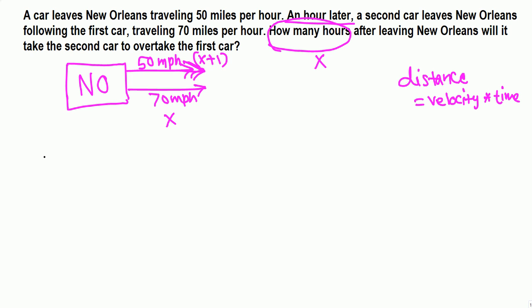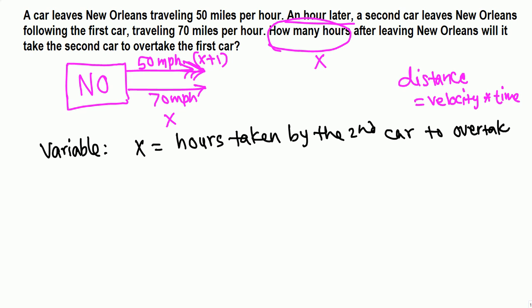We set up in this way: variable is x. x equals the number of hours it will take the second car, hours taken by the second car to overtake the first car. Remember the second car starts one hour after the first car.